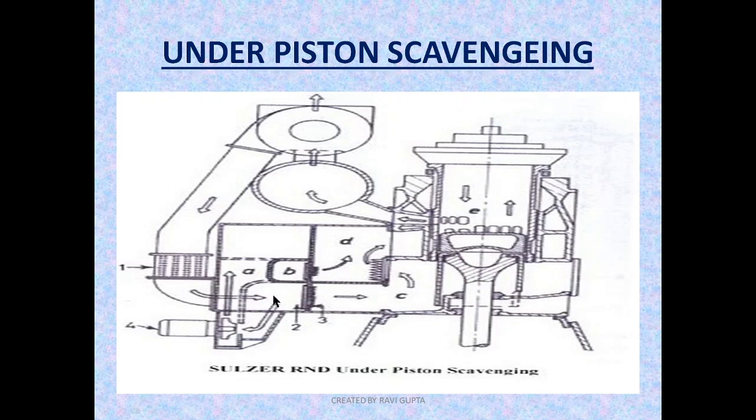As the piston moves up, this air enters this area. During the power stroke, when it moves down, the whole thing gets pressurized. As the piston moves down, the trapped air gets pumped and pressurized. That air pushes through the non-return valve and enters this space, where it can enter the scavenged port and be utilized for the combustion process.